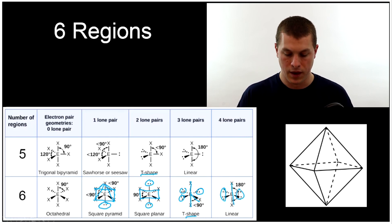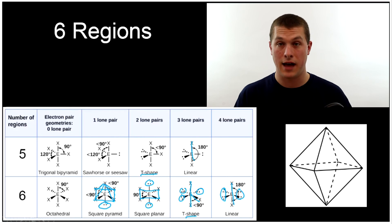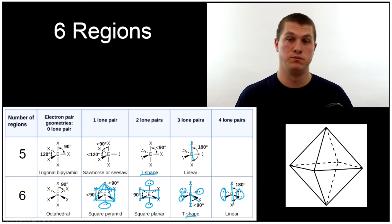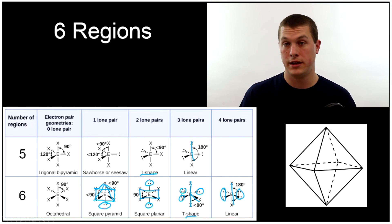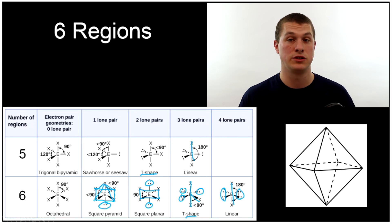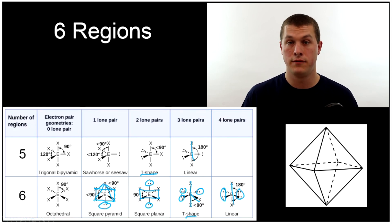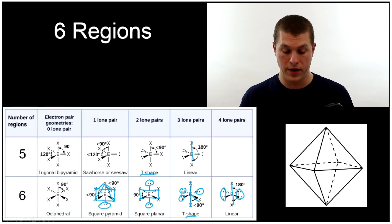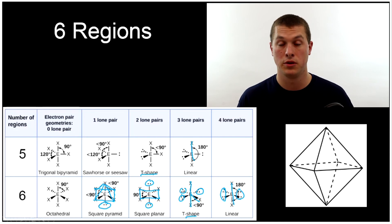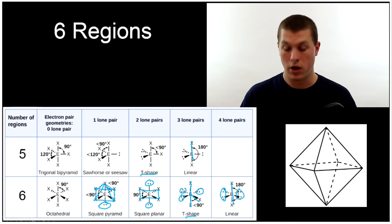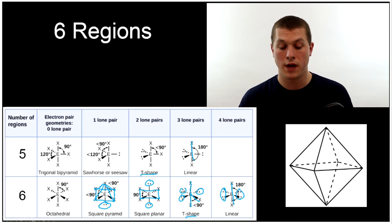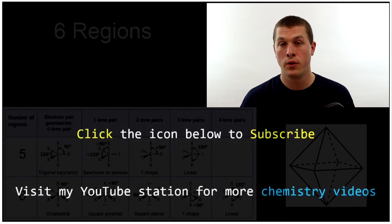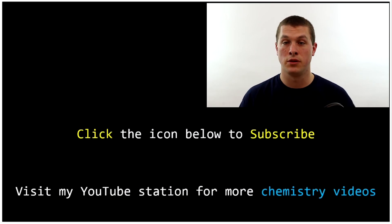So that's a lot — much of this involves memorizing what molecular shape you get given a certain number of regions of electron density and a certain number of lone pairs. That's how we figure out the molecular geometry for any of these molecules. Thank you for watching this episode; if you have any questions please ask them below.